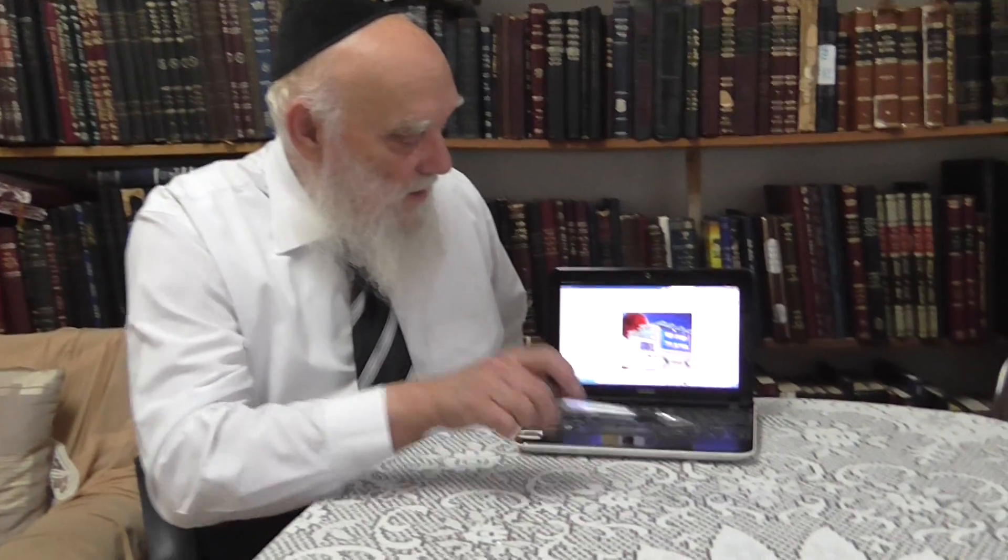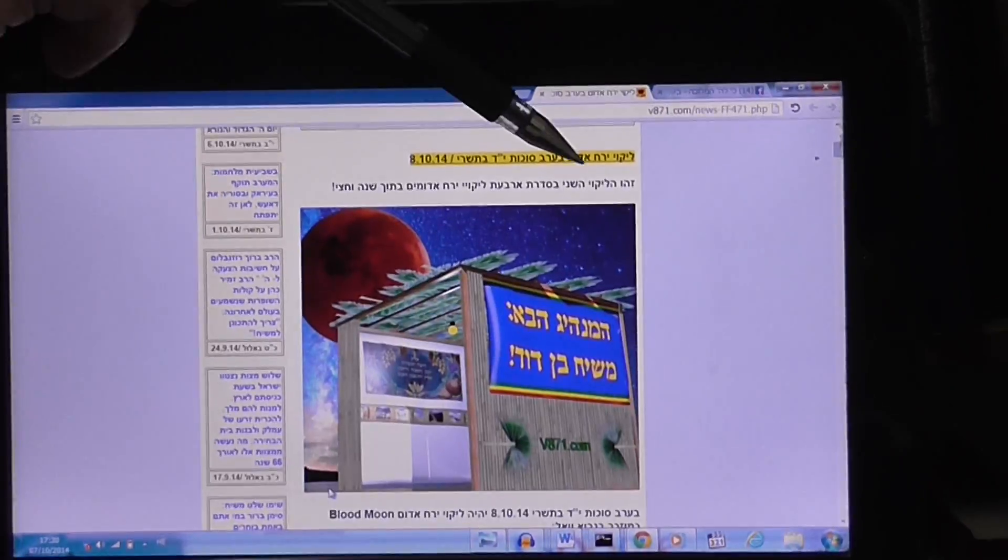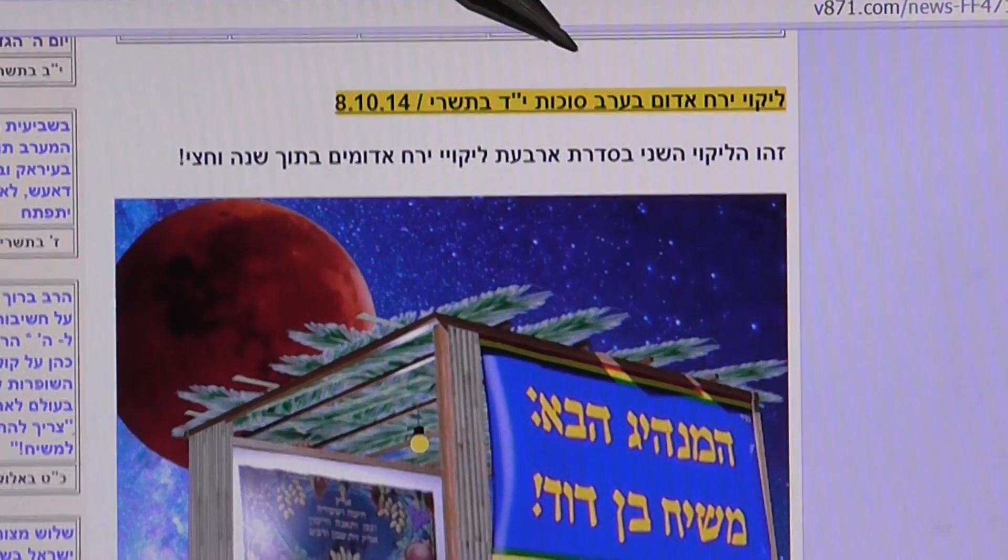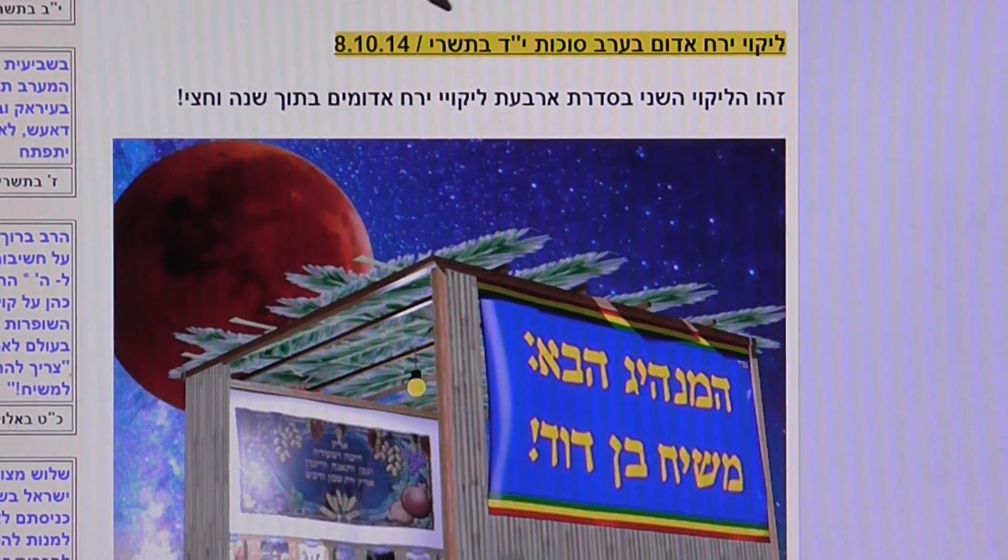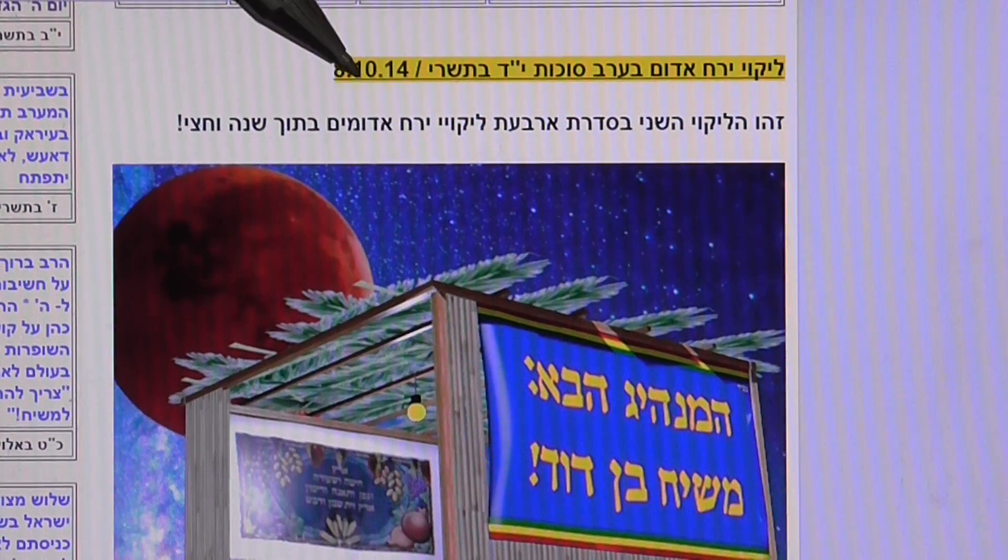Now let us see here, this is by the way interesting, the picture. It is written here, Mikoia Are'ach Adom, this is a red eclipse of the moon, which will be the eve of Sukkot and the 14th of Tishrei.